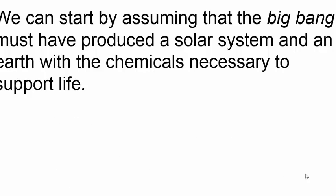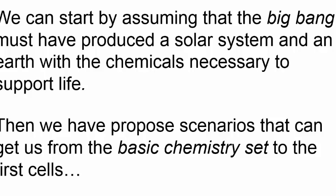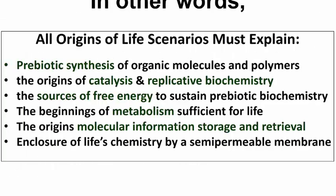Let's start by assuming that the Big Bang must have produced a cosmos and a solar system, including the Earth, that had the chemicals required to support life. Then we must ask how and when did events occur that got us from the basic chemistry set to those first cells. In other words, we have to propose where the free energy came from to infuse inorganic matter with life, along with rational pathways and timelines for the different events.